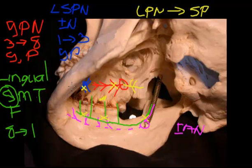So there's a summary of the key nerves on the skull that you need to know to give effective local anaesthetic.